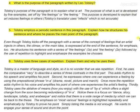Number five: Tolstoy employs a periodic style or sentence in his paragraph. Explain how he structures his sentence and where he places the main point. I would say that even though Tolstoy kicks off the paragraph with the concept of feelings — variety, I might add — that an artist injects or infuses in others, the climax or the main idea is expressed at the end of the sentence, followed by the phrase 'it is art,' used as an emphatic point.